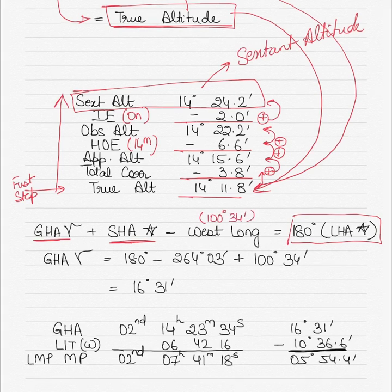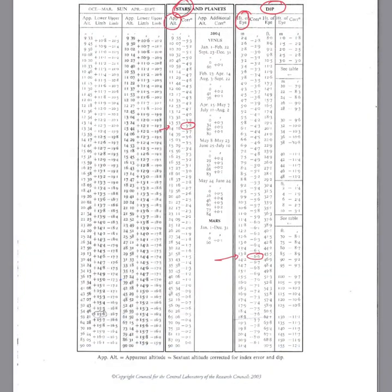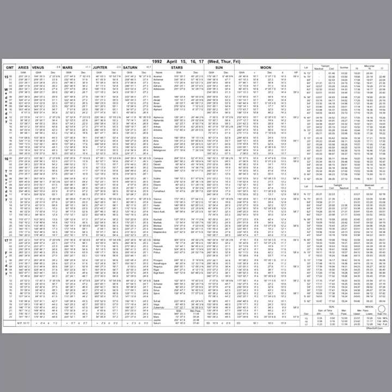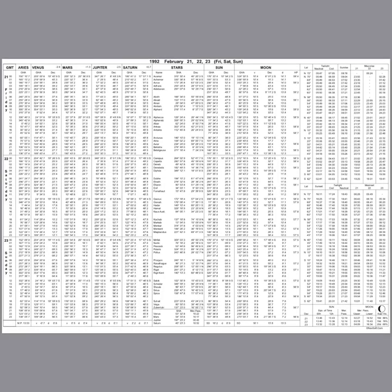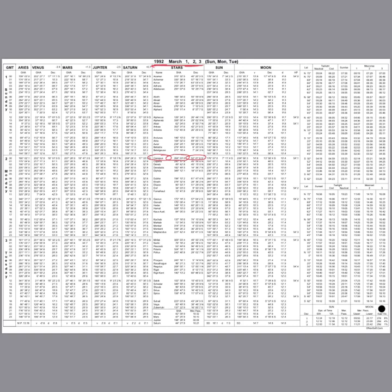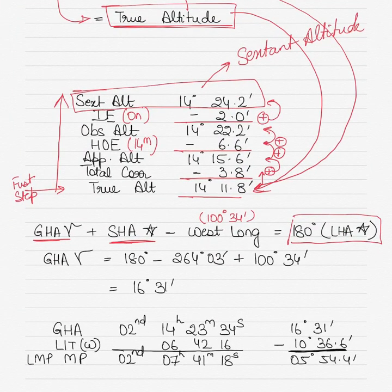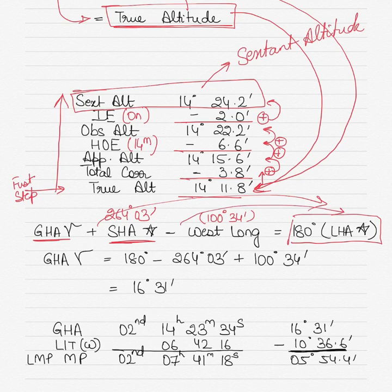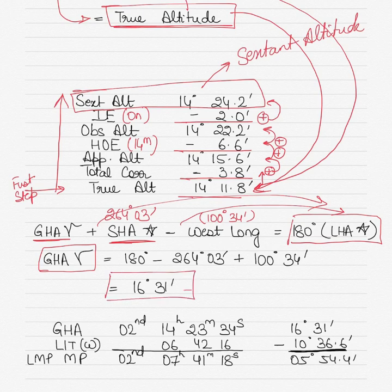The SHA value for Canopus comes from the nautical almanac page for 2nd March — SHA Canopus is 264° 03'. So SHA star is 264° 03' and longitude is 100° 34' West. I don't have GHA Aries yet because that requires knowing the time, which is what I'm solving for. Taking the other known values to the other side, GHA Aries = 180° − 264° 03' + 100° 34', giving an approximate GHA Aries of 16° 31'.